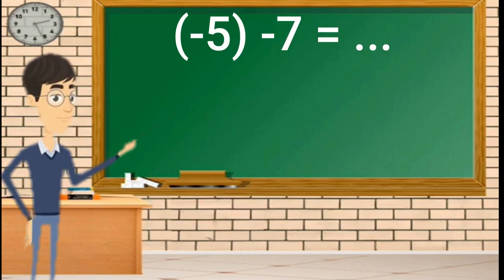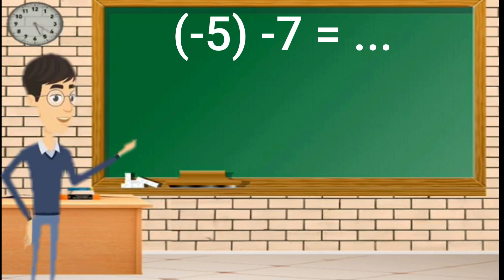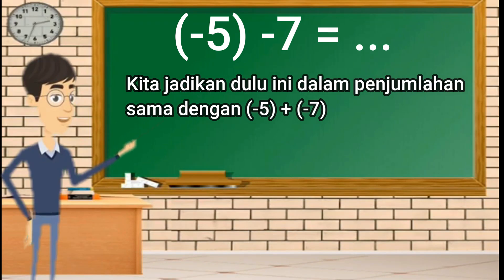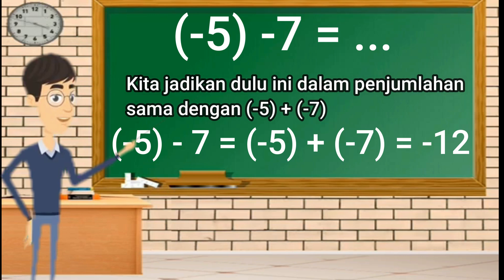Contoh lainnya: negatif 5 dikurang 7. Sebelum kita melakukan penghitungan, kita jadikan dulu dalam penjumlahan. Negatif jika bertemu dengan negatif maka akan positif, maka operasi hitungnya akan berubah menjadi ditambah. Negatif 5 dikurang negatif 7 sama dengan negatif 5 ditambah 7 sama dengan negatif 12.